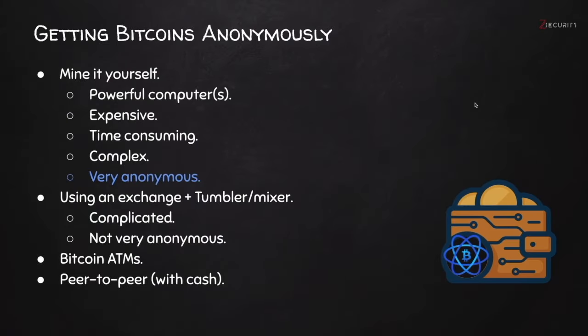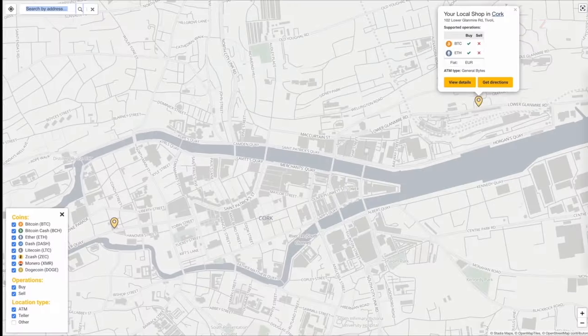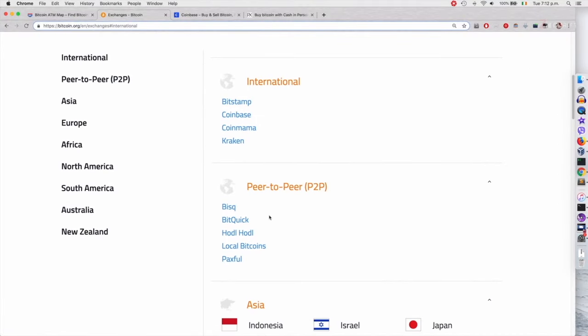Last but not least, we can use peer-to-peer services to buy Bitcoins. Peer-to-peer services allow us to buy Bitcoins directly from the seller — unlike coin exchanges, there is no middleman, no middle institution. If the seller is willing to give us Bitcoins using an anonymous method such as accepting cash, then this will be perfect. Going back to the Bitcoin website, you can see that they list a number of peer-to-peer services. However, pretty much all of these services will either require you to verify your identity, or will only use payment methods that require your identity.